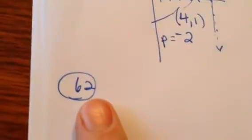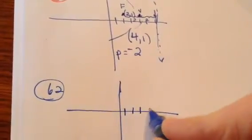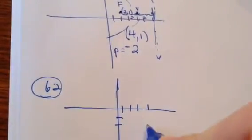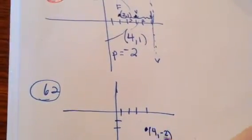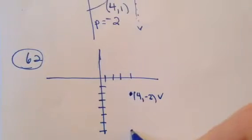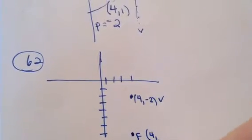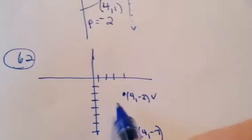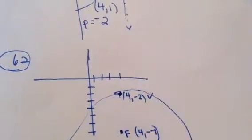Let's try 62. It says the vertex is (4, negative 2). I'm a visual person so I like to plot this out. Here's (4, negative 2) — that's my vertex. It also says the focus is (4, negative 7). So there's 3, 4, 5, 6, 7 — so (4, negative 7) right there is my focus. And that tells me my parabola looks like this, opening downward.